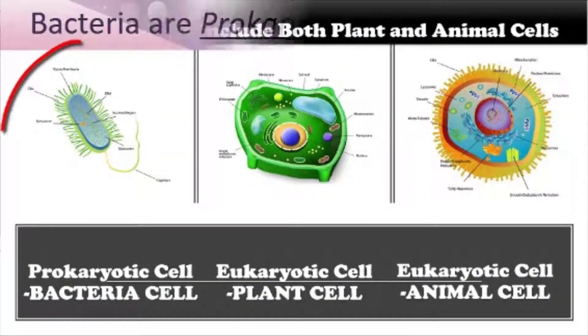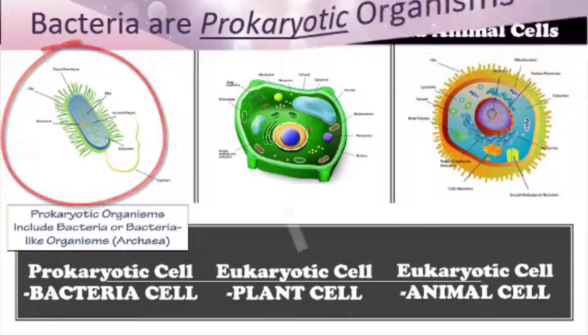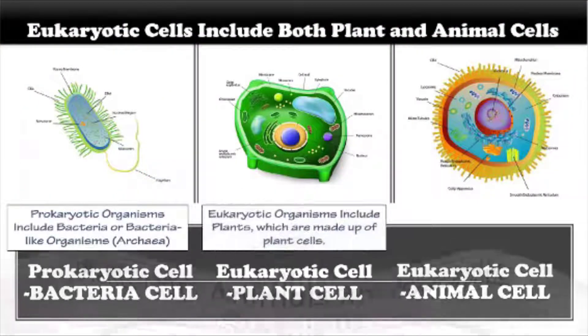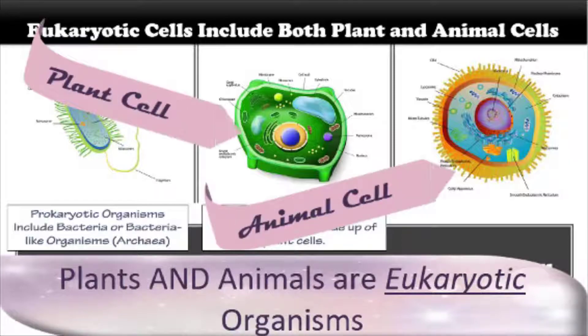Prokaryotic organisms include bacteria and bacteria-like organisms. Eukaryotic organisms include both plant and animal cells.